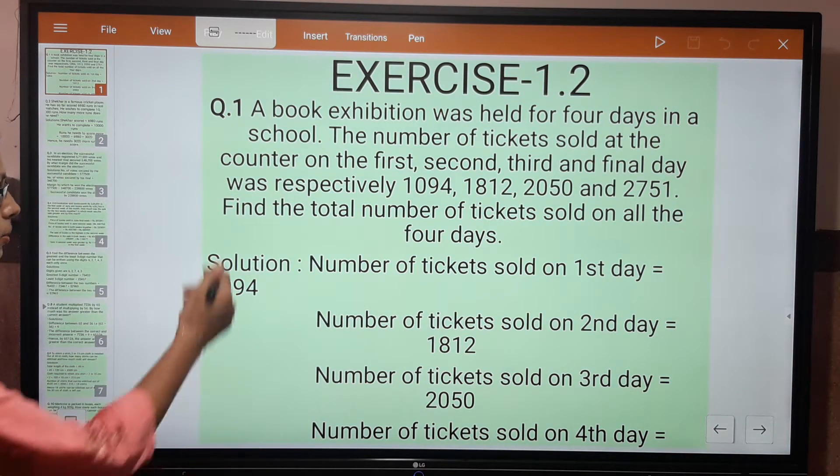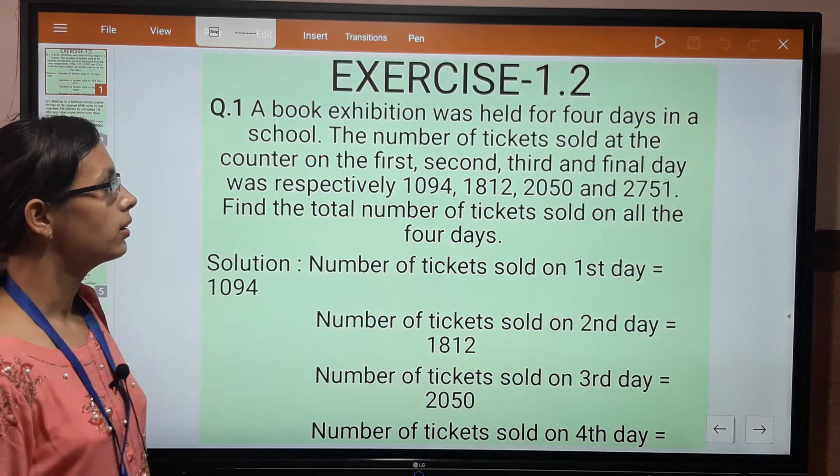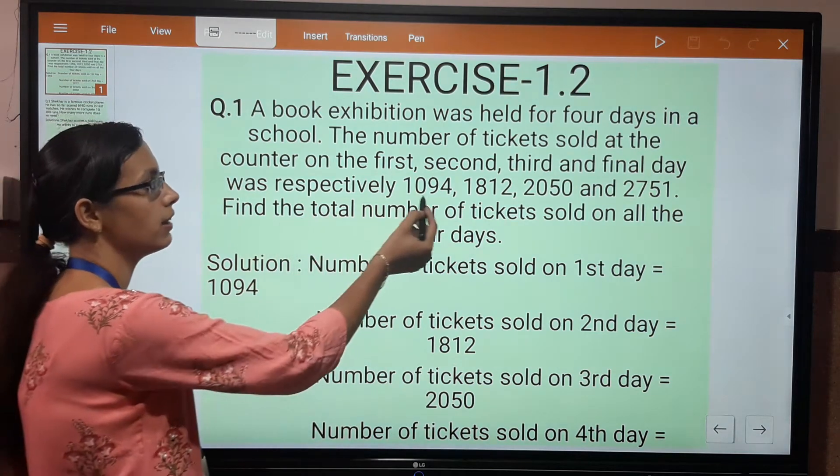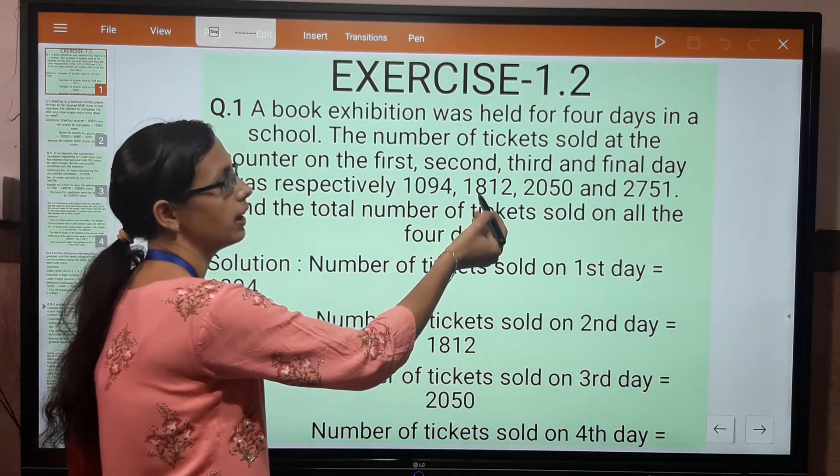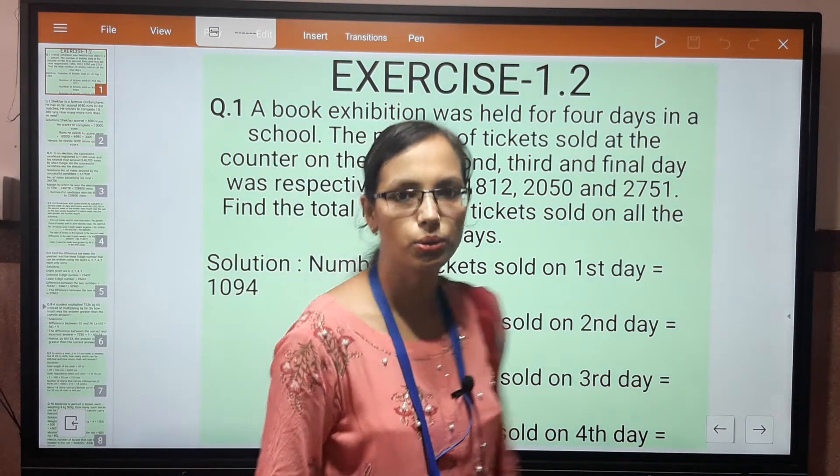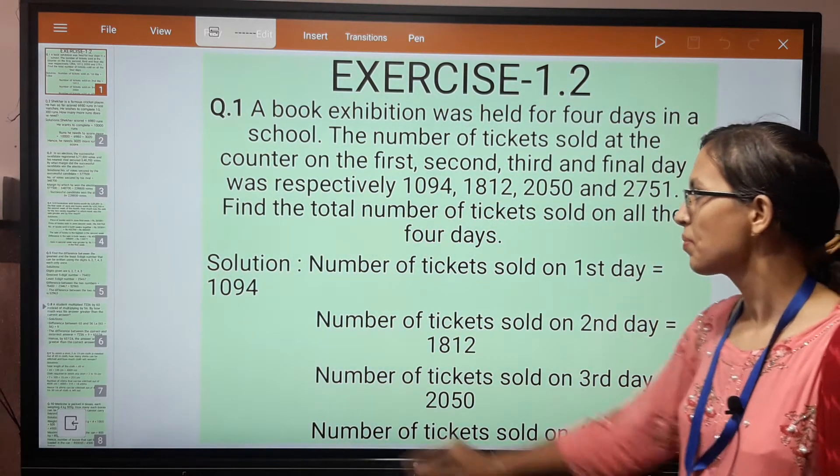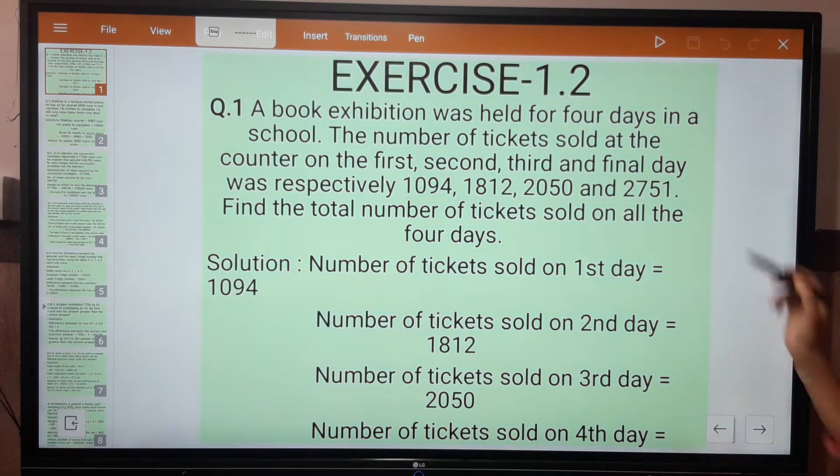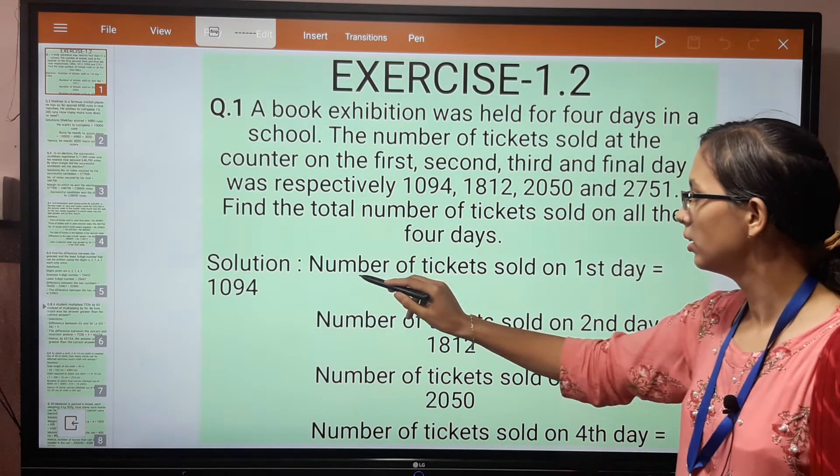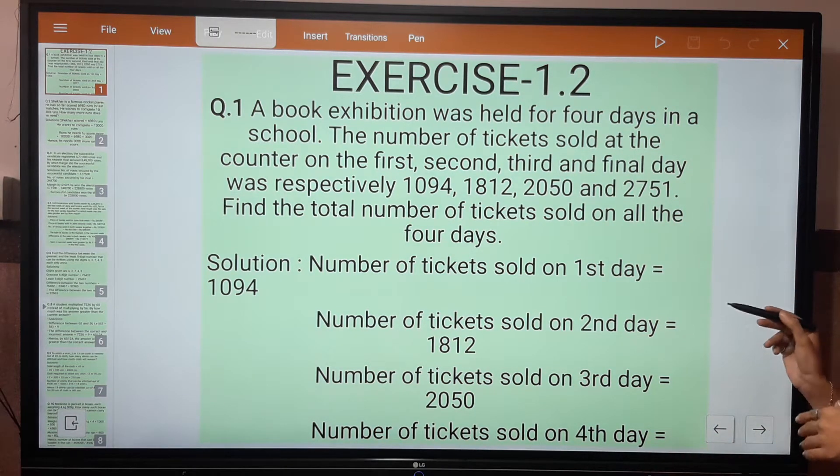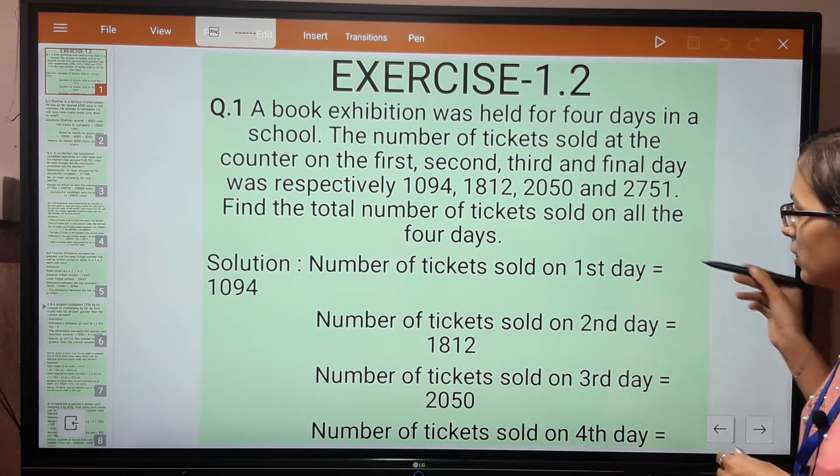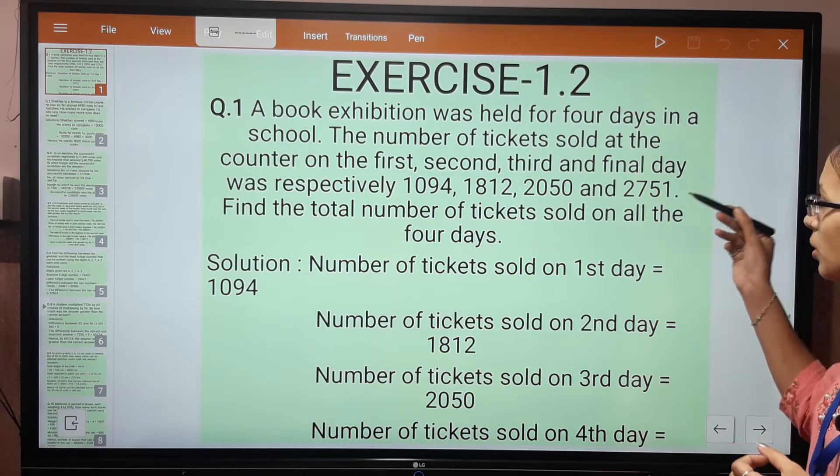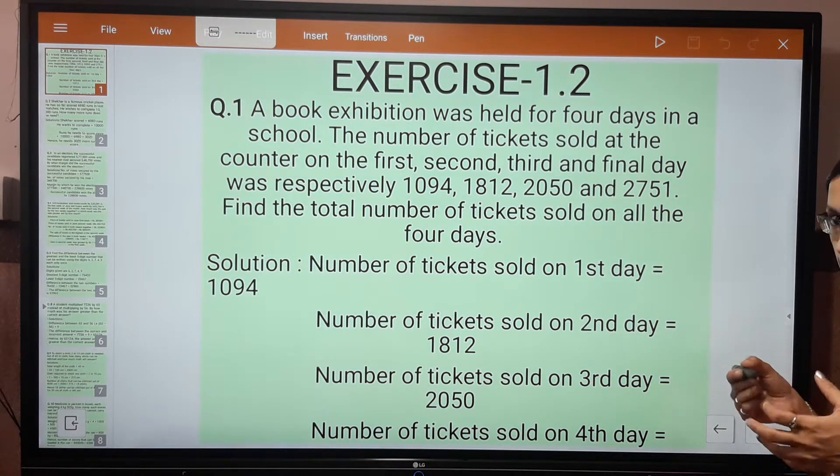Question 1: A book exhibition was held for 4 days in a school. The number of tickets sold at the counter on the first, second, third and final day was respectively 1094, 1812, 2050 and 2751. Find the total number of tickets sold on all the 4 days. In word problems, we have to write down statements. You have to read the question 2-3 times, then write the statements automatically.